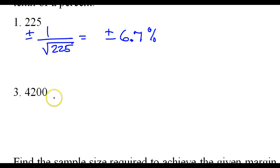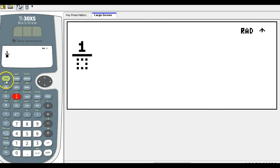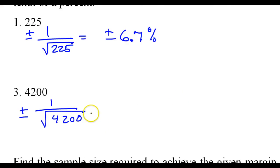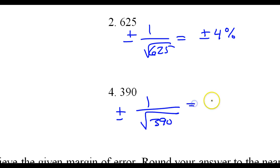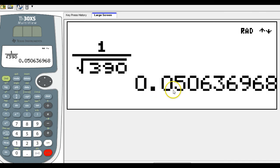Looking at number three, the margin of error will be plus or minus 1 over the square root of 4,200. Move the decimal point twice, that's 1.5%. And number four: plus or minus 1 over the square root of 390. Move the decimal point twice, that's 5.1% — rounding up. And that's how you calculate the margin of error.